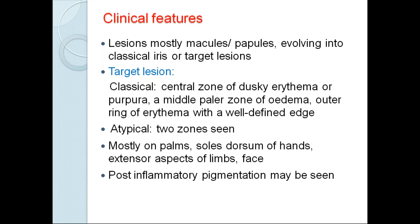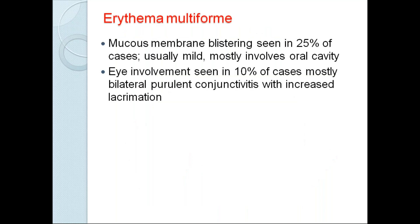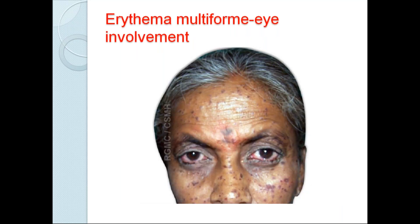There is something called atypical targets — instead of three zones, you will only see two zones. These lesions are mostly seen on palms and soles, dorsum of the hands, and extensor aspects of limbs and face. Post-inflammatory hyperpigmentation will be seen once the lesions heal. Mucous membrane blistering is seen in 25% of cases — usually mild. Eye involvement is seen in only 10% of cases, with bilateral purulent conjunctivitis and increased lacrimation.